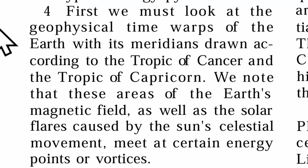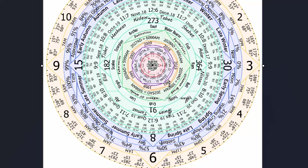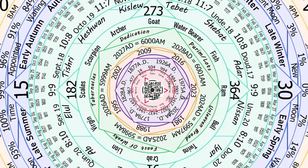First, we must look at the geophysical time warps of the Earth with its meridians drawn according to the Tropic of Cancer and the Tropic of Capricorn. We note that these areas of the Earth's magnetic field, as well as the solar flares caused by the sun's celestial movement, meet at certain energy points or vortices. This is the celestial clock calendar — Cancer being the crab, and Capricorn being the goat.